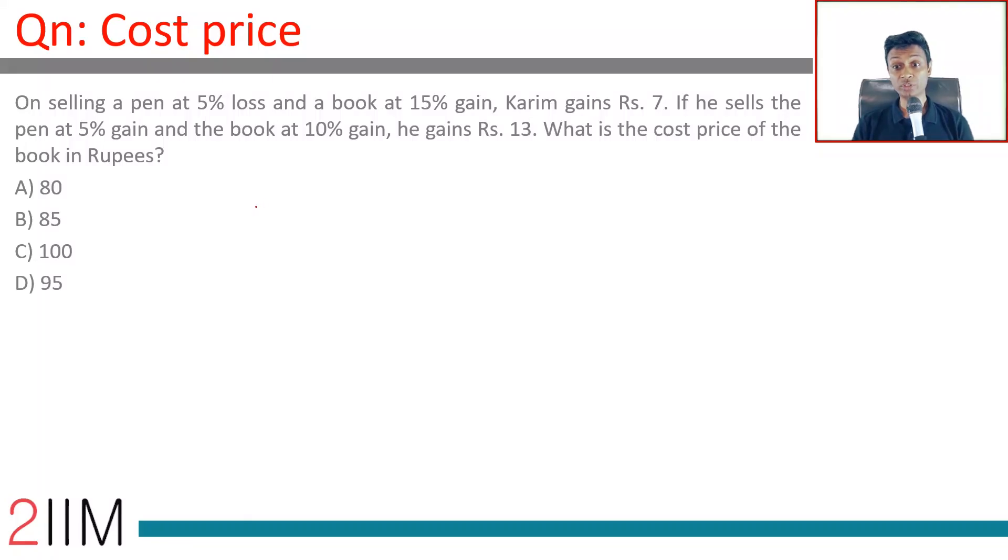On selling a pen at 5% loss and a book at 15% gain, Karim gains Rs. 7. Pen into 5% minus plus book into 15% is Rs. 7. This is price of pen, price of book. He sells pen at 5% gain and the book at 10%, he gains Rs. 13. What is the cost price of the book?